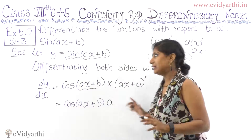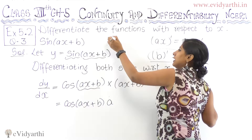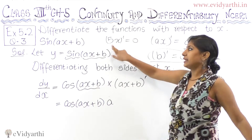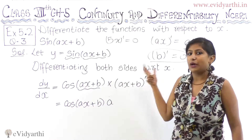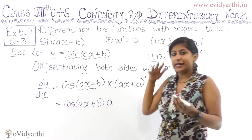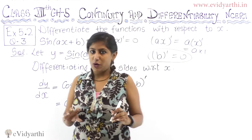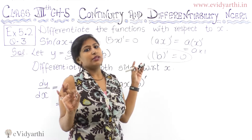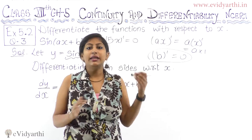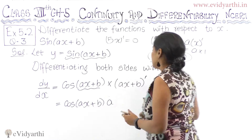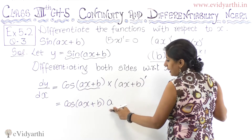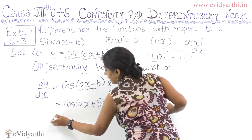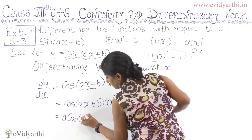I have seen many children write that the derivative of 5x is just the constant, which is wrong. When we have a constant multiplied by x, we take the constant and differentiate x, giving a times 1. If it is just a constant, it will be 0. So, a times cos(ax + b) is the answer.